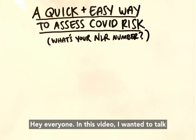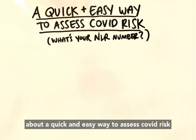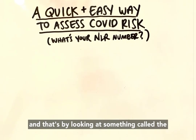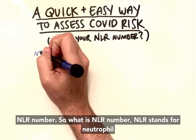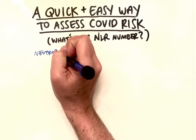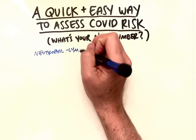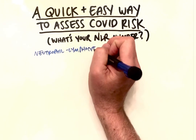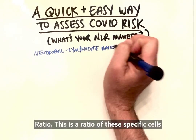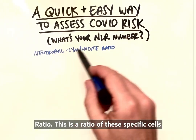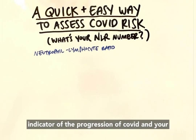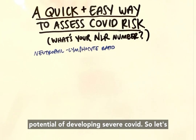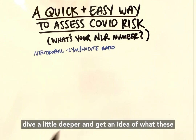Hey everyone, in this video I wanted to talk about a quick and easy way to assess COVID risk, and that's by looking at something called the NLR number. NLR stands for neutrophil-to-lymphocyte ratio. This is a ratio of specific cells in the immune system that give us a really good indicator of the progression of COVID and your potential of developing severe COVID.